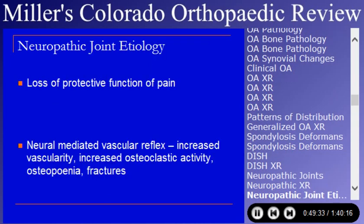Neuropathic joint etiology has two different presumptive etiologies: loss of the protective function of pain, or a neuromediated vascular reflex. These are not mutually exclusive.